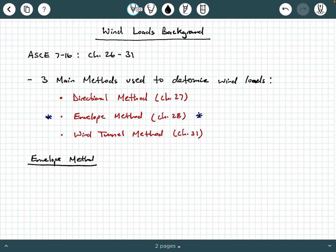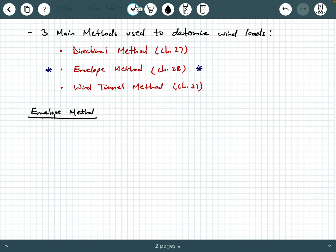With the envelope method, this method is mostly applicable to low-rise buildings. It's used for low-rise buildings with flat or gable roofs or hip roofs. You can use it for hip roofs as well. It's mostly defined in chapter 28. If you have a copy of ASCE 7-16 handy, I would flip to chapter 28.